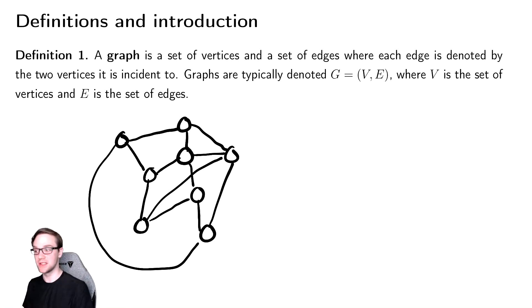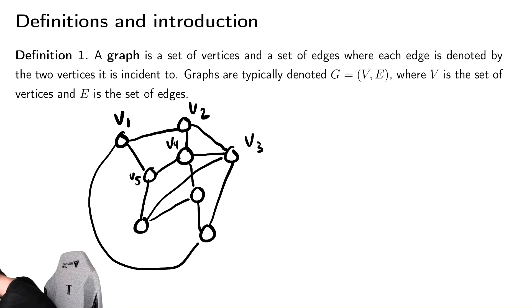We're going to associate some labels with these vertices so we can distinguish them from each other. So we'll call one V1 for vertex 1, vertex 2, vertex 3, vertex 4, vertex 5, vertex 6, vertex 7, and vertex 8.